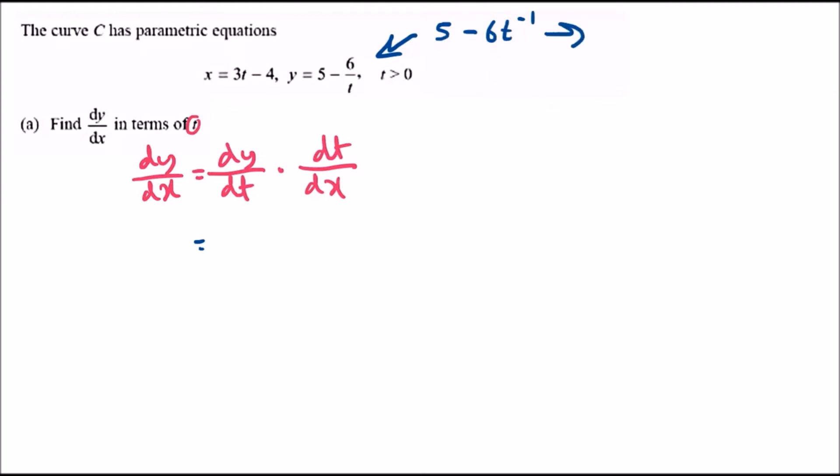Let's differentiate: 5 is nothing, and minus 6t to the power negative 1 - drop the negative 1 and we get positive 6 times t to the power negative 2, or 6 over t squared.